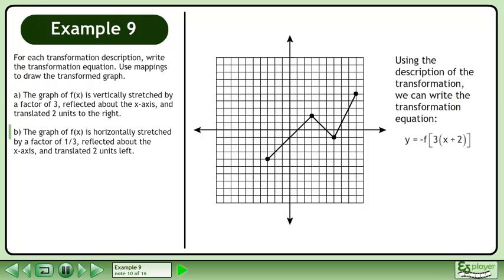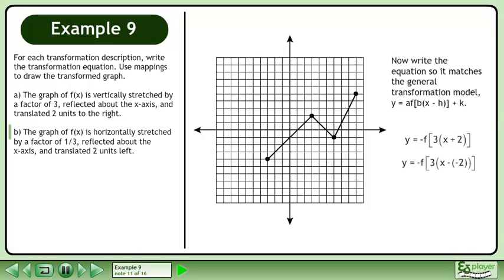Using the description of the transformation, we can write the transformation equation y equals negative f of 3 times x plus 2. Now write the equation so it matches the general transformation model y equals a times f of b x minus h plus k. On the right side, we write x plus 2 as x minus negative 2 so it matches x minus h in the general model.